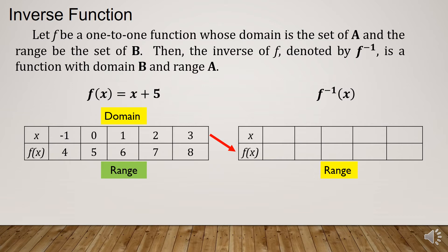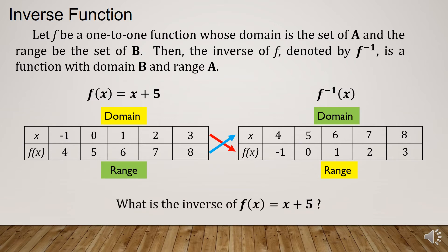Since we are talking about the inverse, the domain of the given function will become the range of the inverse function. So the range elements are -1, 0, 1, 2, 3, while the domain elements are 4, 5, 6, 7, and 8. We have interchanged the domain and range: the domain of the given function is the range of its inverse, and the range of the given function is the domain of its inverse.